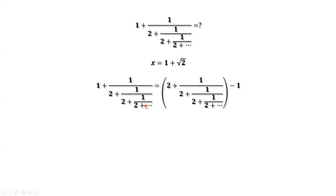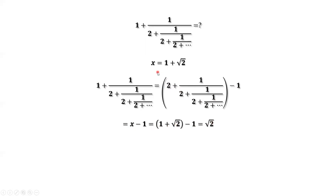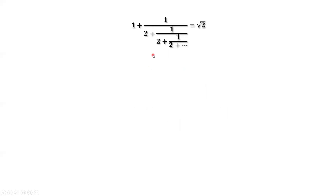Back to the question: the given expression equals x minus 1. Originally the outer term is 1, but we need it to be 2, so if we change 1 to 2 we have to subtract 1 on the outside. This is x by definition. So x minus 1 equals 1 plus square root of 2 minus 1, which equals square root of 2, because x equals 1 plus square root of 2. Therefore, this continued fraction equals square root of 2.